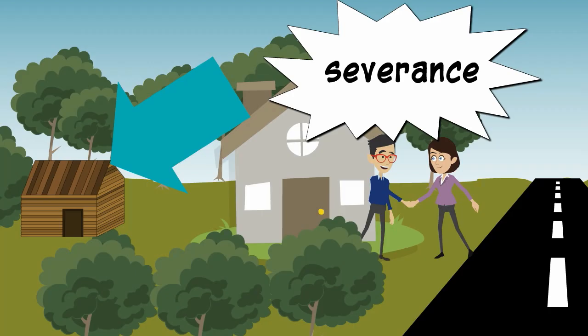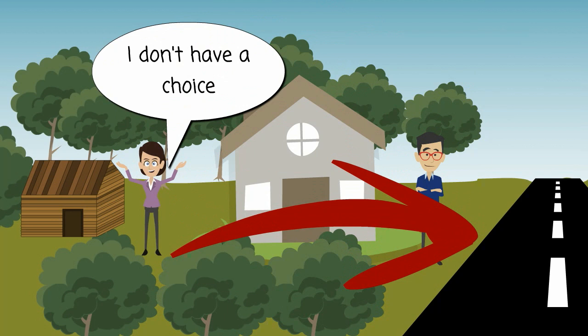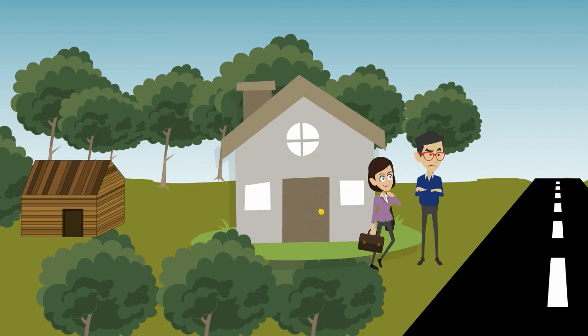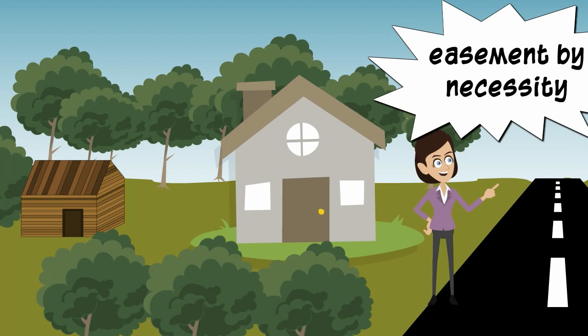Our second requirement is a necessity for the easement. At the time of the sale, when Ellie acquired the western portion of this property, it was absolutely necessary for Ellie to pass through Ollie's property if she wanted to reach the road. When Ellie walks through Ollie's property, she's doing it because she has to. Crossing the property was absolutely necessary if she was going to reach a public road. So now we have severance of title, and the easement was necessary at the time of the severance. Ellie should have an easement by necessity to cross through Ollie's property to reach the road.